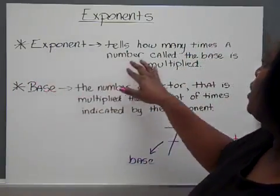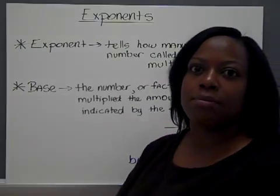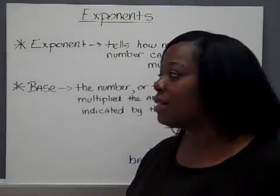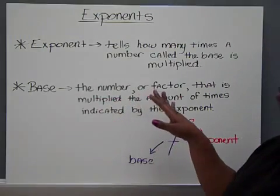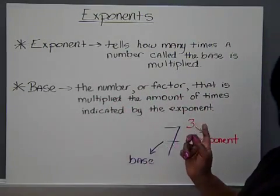First, an exponent tells how many times a number called the base is multiplied. Well, you may be wondering, okay, what's a base? Well, a base is the number or factor that is multiplied the amount of times indicated by the exponent.